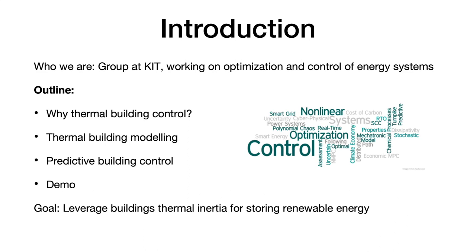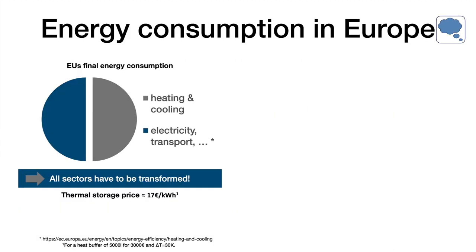To give a short outline: we use optimal control for thermal building control. The first point will be why you would like to do that, then a short introduction to thermal building modeling for this control, and also the considered control approach. The goal is to use the thermal inertia of buildings to store renewable energy overproduction.